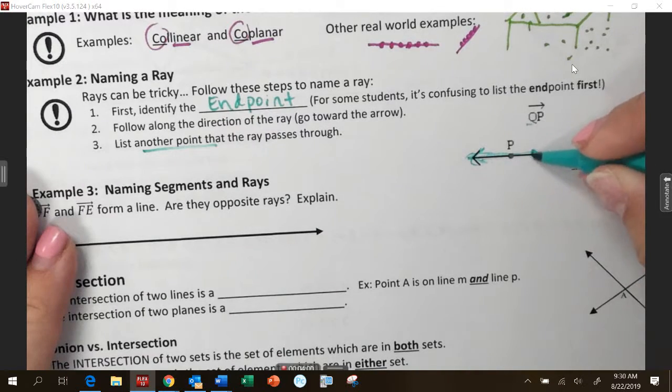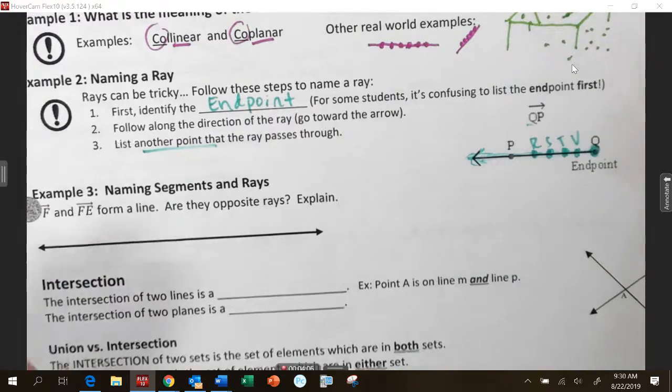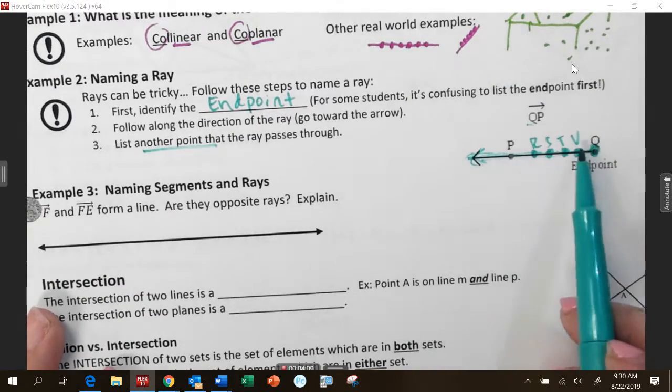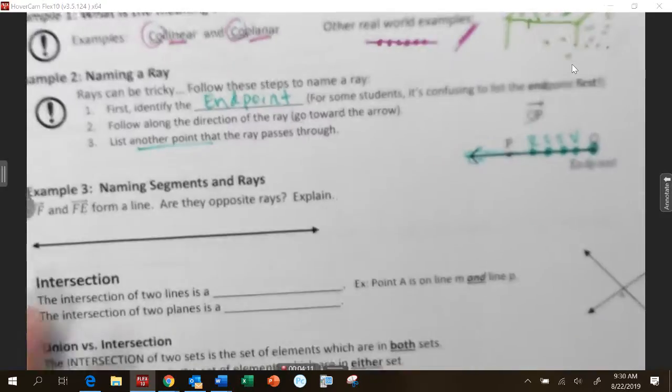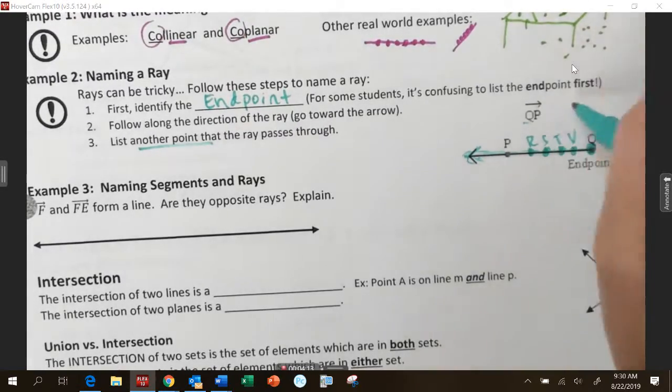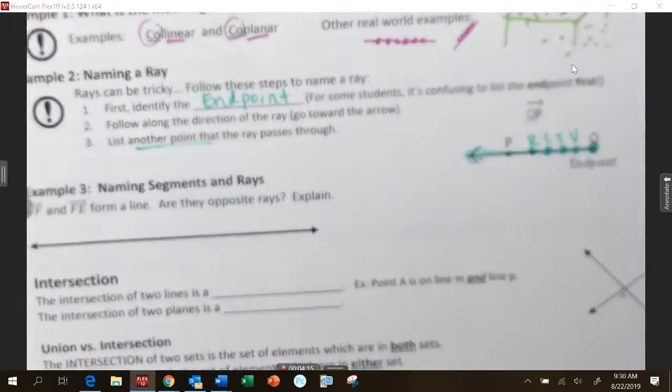It doesn't matter if it passes through seventeen other points, R, S, T, V. It doesn't matter how many points it passes through. You just use two points. The endpoint and any other point on that ray. And then, it does go left to right the way you read it. It does not go the other direction.